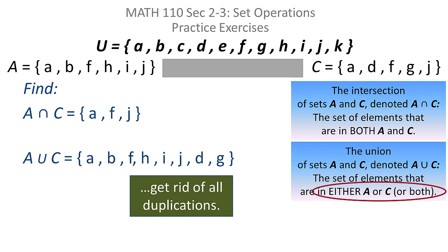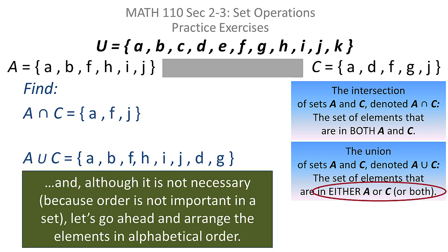I end up with A union C being the set consisting of the elements A, B, F, H, I, J, D, and G. It's not necessary to put these things in any particular order, but some people like to see them in alphabetical order, so I'll alphabetize those — though it's not strictly necessary.